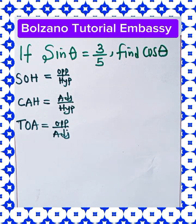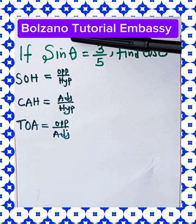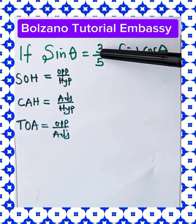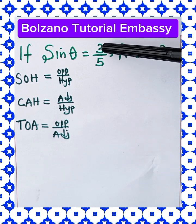Now from the question, we're told that we should find cos theta. Now let's represent this given value on a right angle triangle.